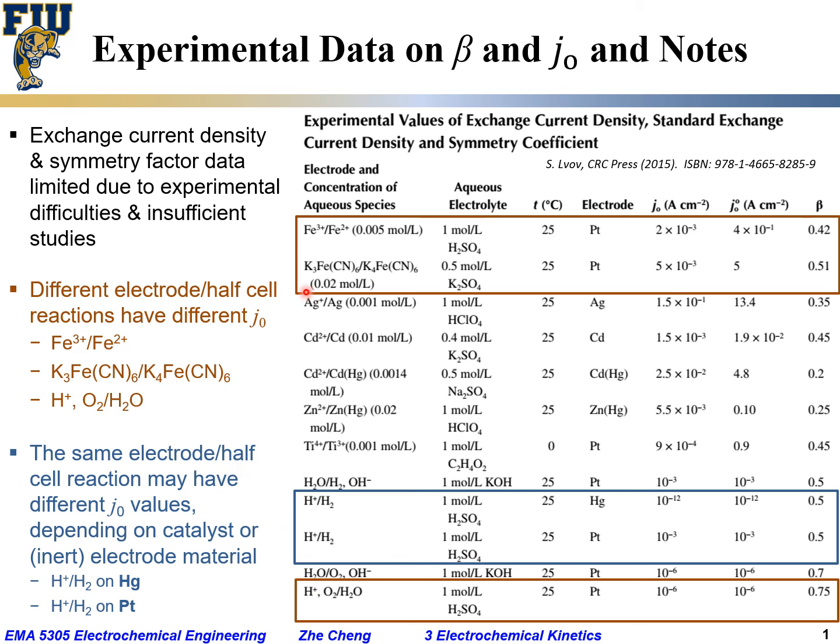Different reactions may have very different J0 values. And even for the same reaction, depending on the catalyst used, either by its chemistry or even in some cases surface structure, the exchange current density can also be very different. And that relates to the domain of electrocatalysis.